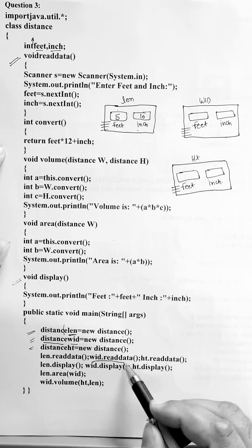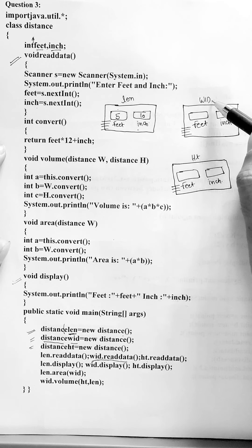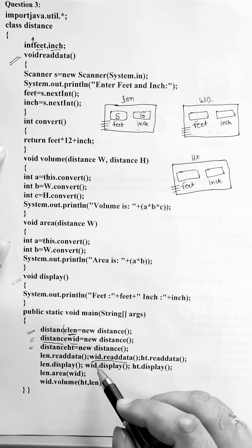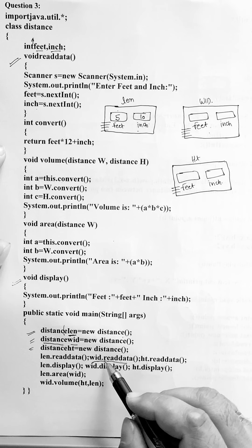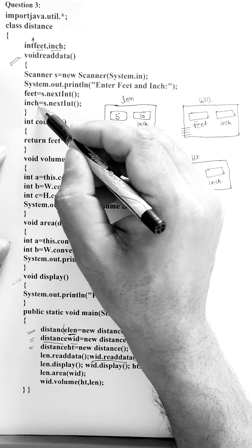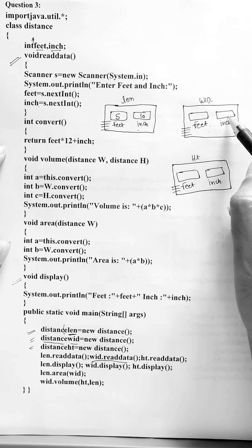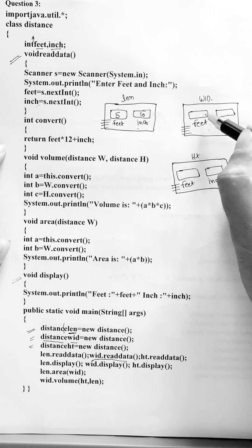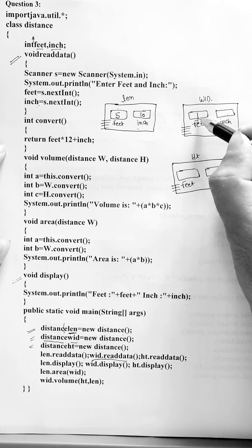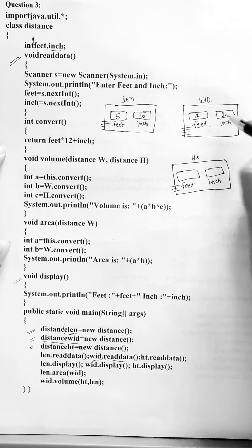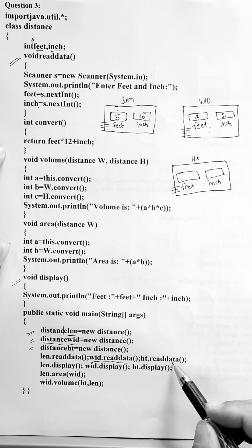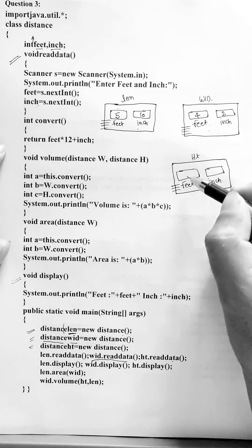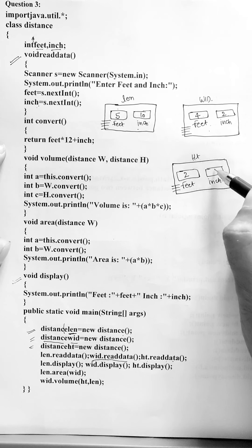The next statement is width.readData. That is the second object — width. This function will run for it. We are calling the method through the width object, so the feet and inches entry will be stored in width's feet and inches. Suppose you input 4 and 2. And in the same way, the third object will also call readData. Suppose I input 2 and 6.